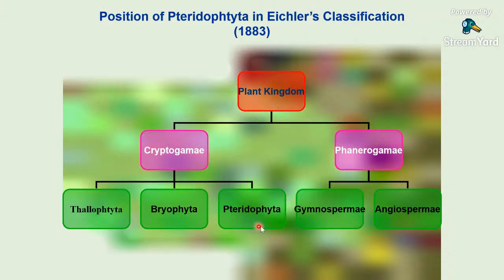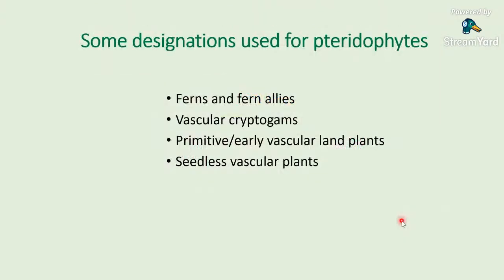Under Cryptogamia, it is only Pteridophyta which has vascularization. Pteridophyta do not have seeds, while gymnosperms have naked seeds and angiosperms have seeds within fruit. These plants are called ferns and fern allies — meaning plants that are fern-like based on their similar life cycle. We also call them vascular cryptogams, because cryptogams are plants with hidden sex organs, and among these, pteridophytes have vasculature — xylem and phloem — unlike algae, fungi, and bryophytes.